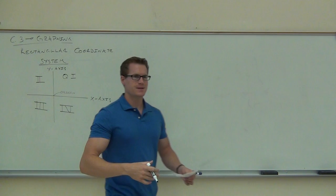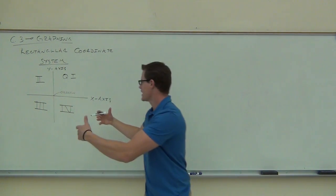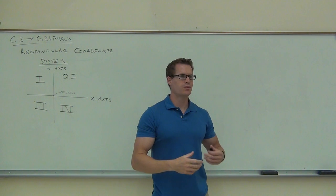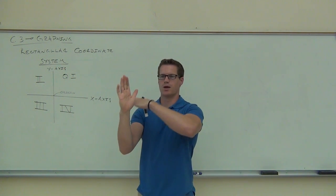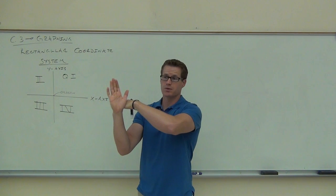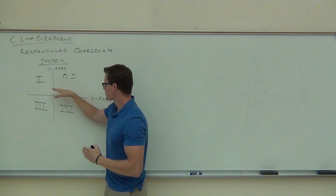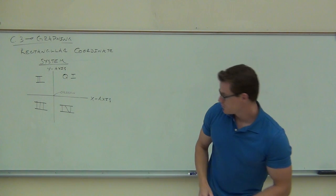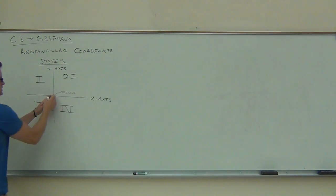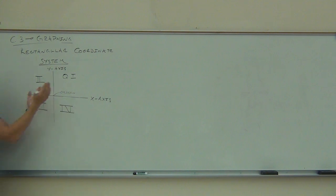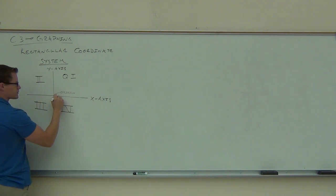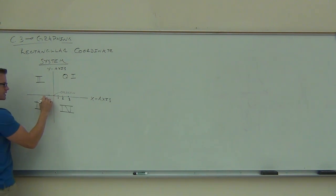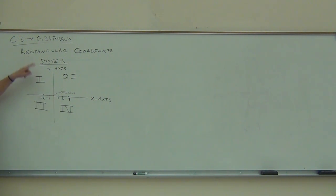The X axis and Y axis are assigned values. What we have here is a crossing of two number lines that go in both directions — one horizontally, one vertically. Positive goes to the right on the X axis, and negative to the left. That's why our origin is zero, zero. For the vertical axis, positive goes up.